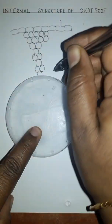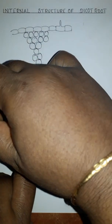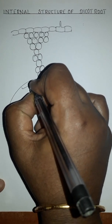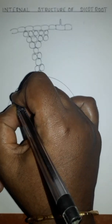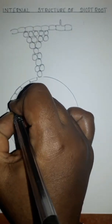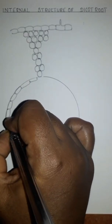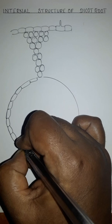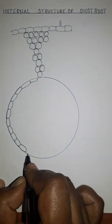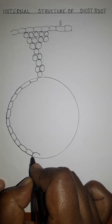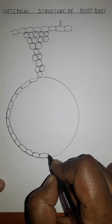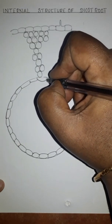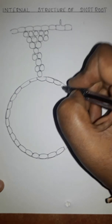Next to the cortex region you will see the endodermis. It is a single layered structure made up of parenchymatous barrel-shaped cells. Epidermis is present outside, while endodermis is present inside — 'derma' means skin. Morphologically these cells are similar; both are barrel shaped. This endodermis stores starch, so we can also call it the starch sheath.